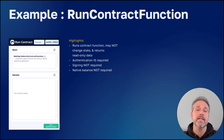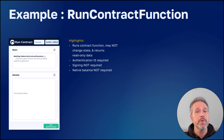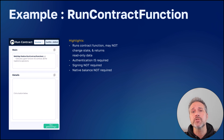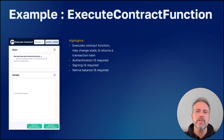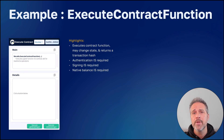We'll take a look at an example scene that calls run contract function. You'll be able to download and check this out yourself, and you can move this code into your project if it makes sense for your needs. We'll also look at a demo of the execute contract function. These operations may change the state of the contract, making them more powerful, and the return value is always going to be the transaction hash.